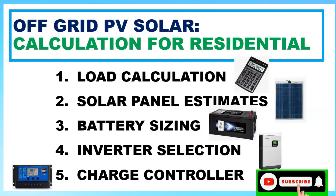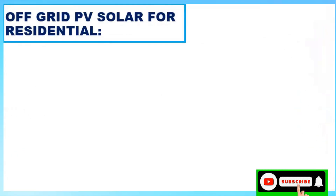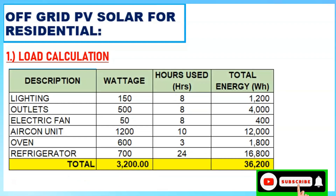Let's determine the capacity we need. For load calculations, we have a specific load example that represents typical household usage. The table has: description, wattage, hours used per day, and total energy consumed. Our loads include lightings, outlets, electric fan, aircon unit, oven, and refrigerator.